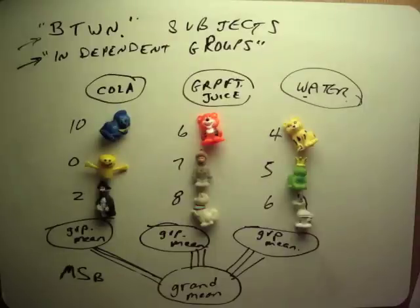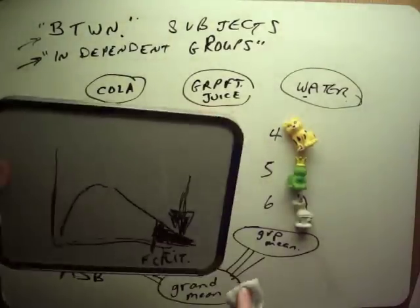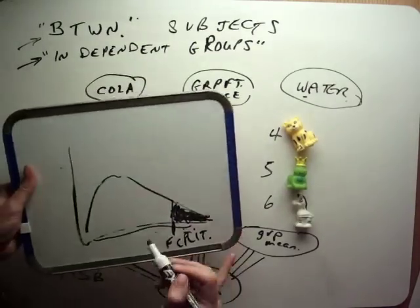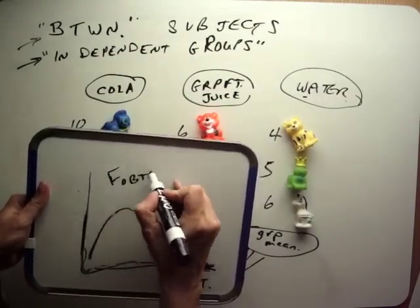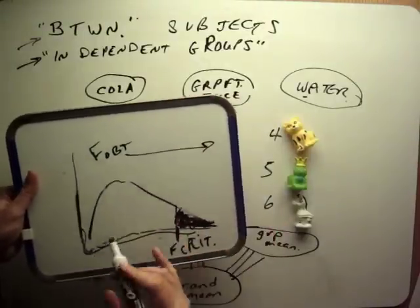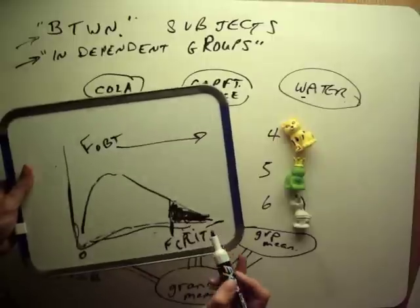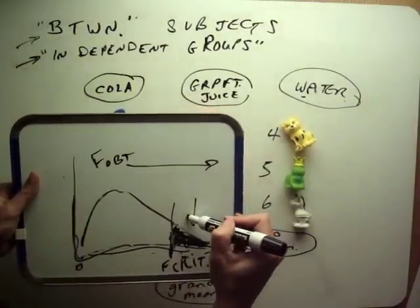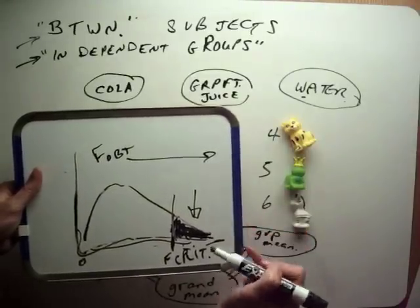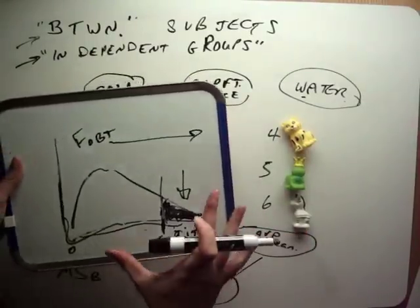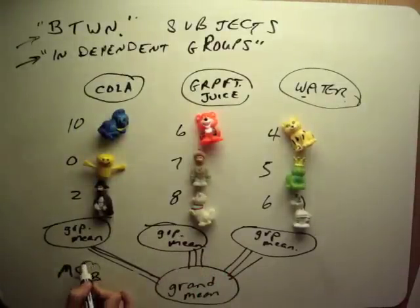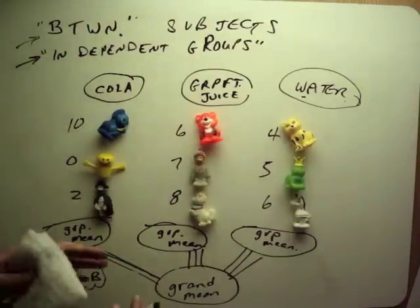From our lecture on power, we want F-obtained to be as large as possible so it exceeds F-critical, falls in the rejection region, lets us claim an effect, and publish our study. We'll have more statistical power if we design our experiment to maximize mean squares between. Write that down if you don't yet have it ingrained in your memory banks.